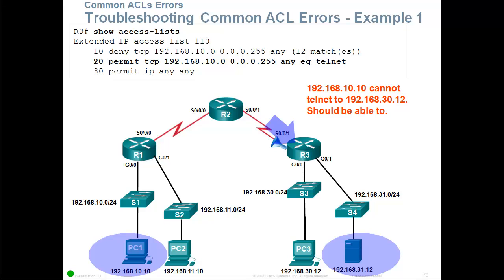The problem is in bold here. Sequence 20 says permit TCP 192.168.10.0 0.0.0.255 any equal to Telnet. But in statement sequence number 10, we are saying deny TCP 192.168.10.0 0.0.0.255 any — and Telnet uses TCP. So after there has been a match on sequence 10, sequence number 20 has never been read. Sequence 20 should be above sequence 10, so 20 should be before 10.